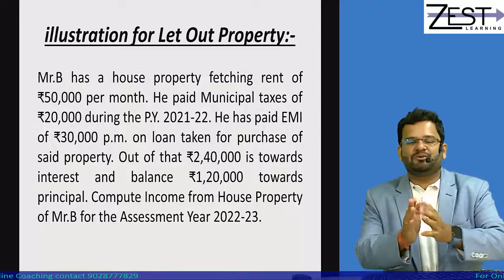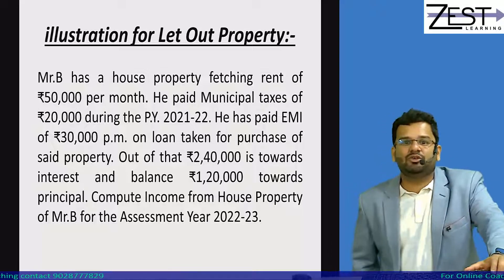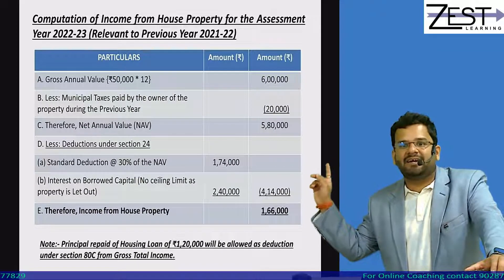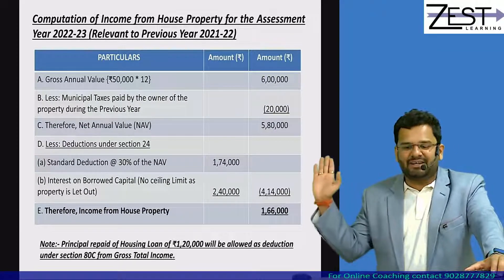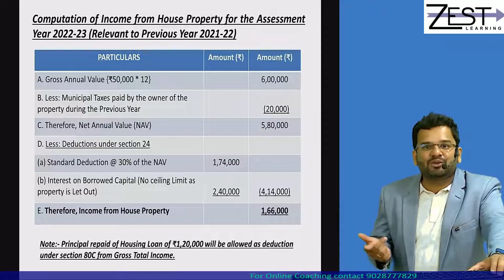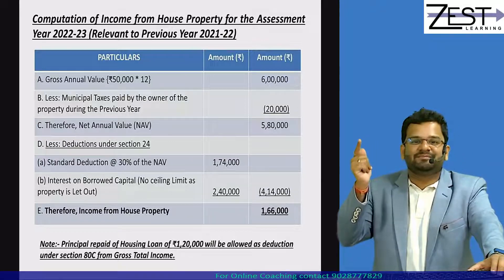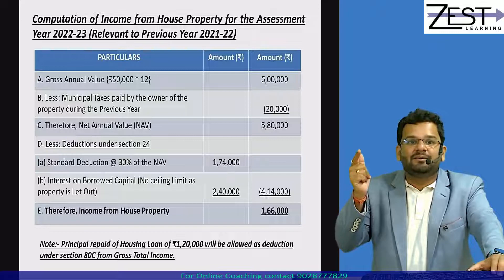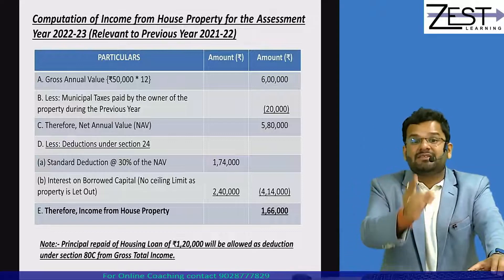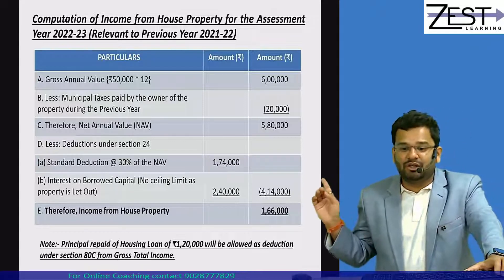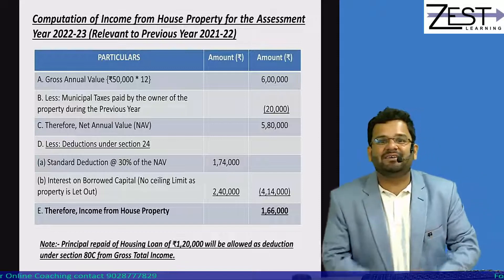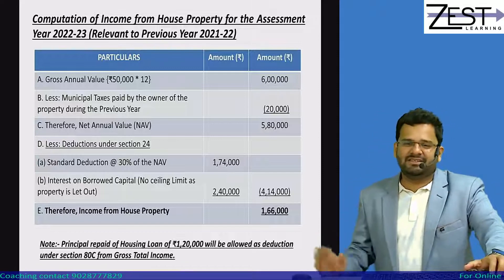GAV is 6,00,000. Minus municipal taxes paid of 20,000 — so 6,00,000 minus 20,000 gives NAV of 5,80,000. Now take standard deduction of 30% of NAV — that is 1,74,000. And take interest on borrowed capital — take the full deduction of 2,40,000. Why no limit? Because this property is let out. Ceiling limit applies only for self-occupied property. So income from house property = 5,80,000 − 1,74,000 − 2,40,000 = 1,66,000.